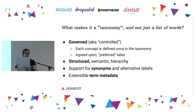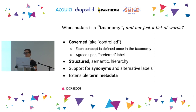What makes a taxonomy a taxonomy and not just a list of words or hashtags or free keywords? The key points are that it is governed — we often say it is controlled. Each concept or idea exists once in the taxonomy with an agreed preferred label, and it is structured. It has semantic relationships to other things in the taxonomy, usually represented in a hierarchy. We also support synonyms and alternate labels, capturing all of that richness in term metadata. You can already start to see how Drupal, which treats everything as an entity, works really well with this idea of having a list of words that have metadata.